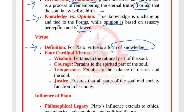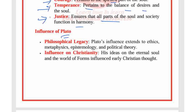For Plato, virtue is a form of knowledge. He outlined four cardinal virtues: wisdom, which pertains to the rational part of the soul; courage, which pertains to the spirited part; temperance, which pertains to the balance of desires; and justice, which ensures that all parts of the soul and society function in harmony.